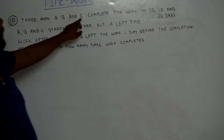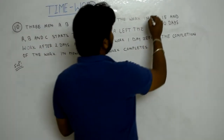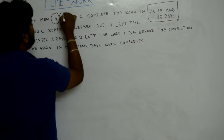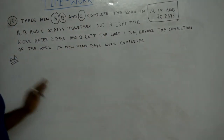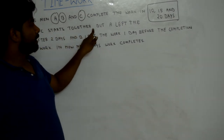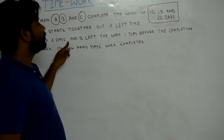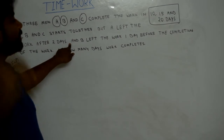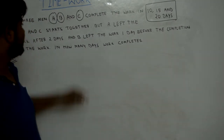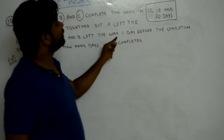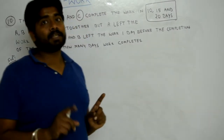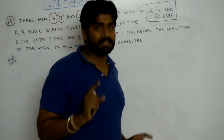Three men A, B and C complete the work in 10, 15 and 20 days. A, B and C start together. But A left the work after 2 days, so B and C continue. B left the work one day before completion, so only C worked on the last day.